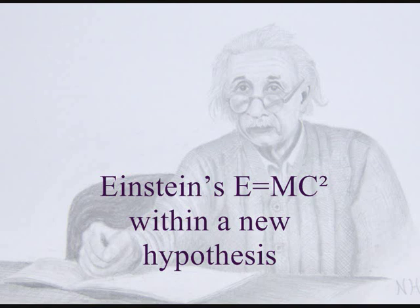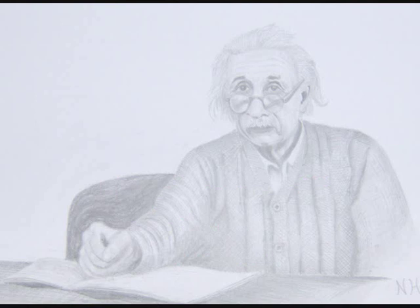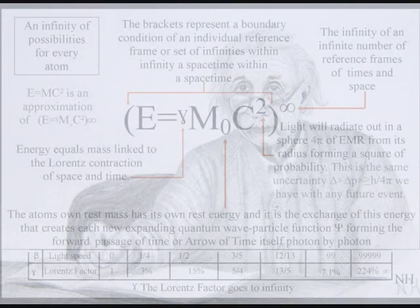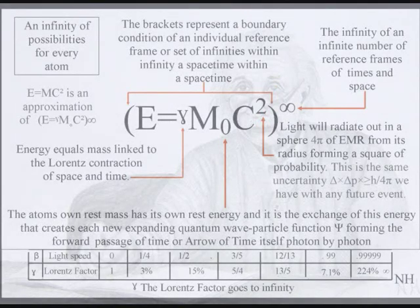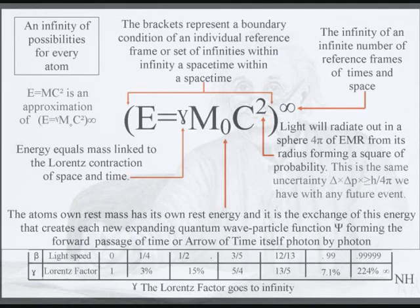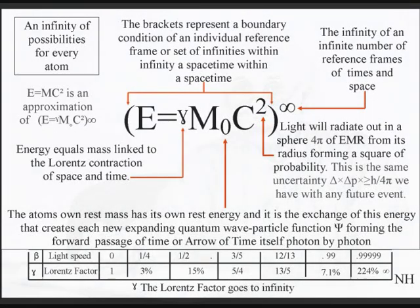Energy equals mass times the speed of light squared is the most famous equation in physics, but could this equation give us an objective understanding of the universe? All we have to do is place the Lorentz contraction of space and time between the energy and mass. Therefore, the greater the energy, the greater the contraction of space, and the slower time will run. Mass will increase relative to this, and each reference frame can be seen as a vortex in space and time.